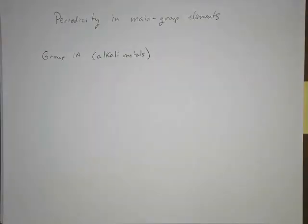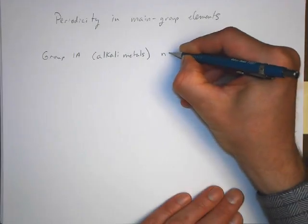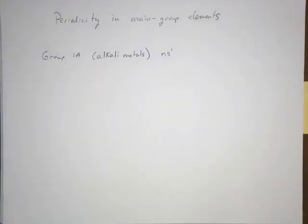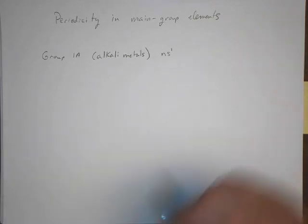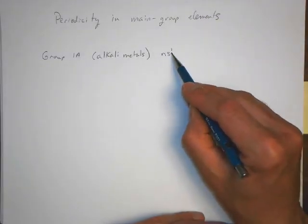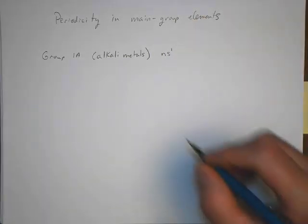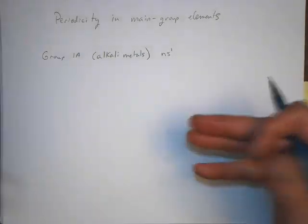Their electronic structure, let's look at their electronic structure. The valence electrons look like this: n s 1. So n meaning would be the highest quantum number, s 1. There's one electron in the s orbital in each of those cases.